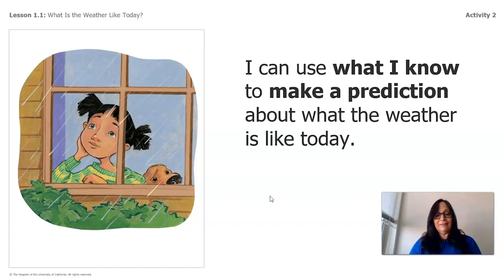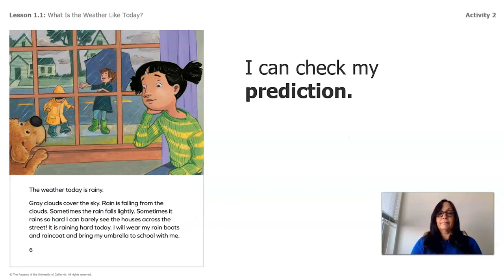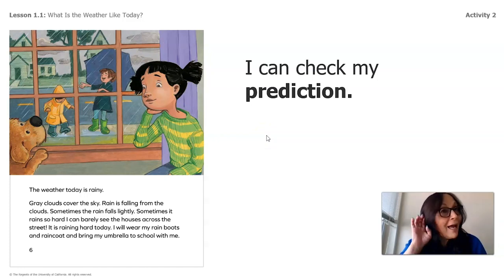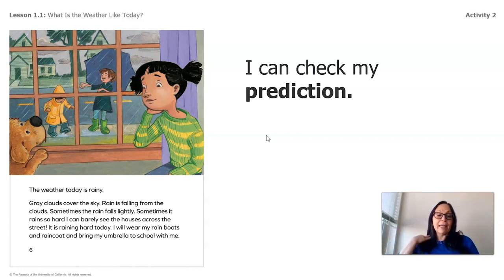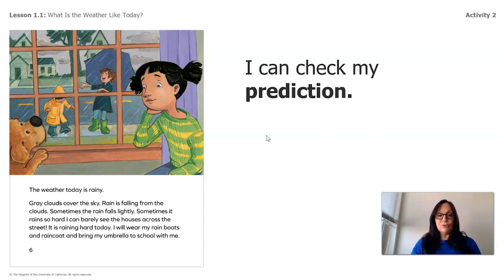Do you want to find out? Let's see our next page. Now I can check my prediction — and yes, the weather today is rainy! Gray clouds cover the sky and rain is falling from the clouds. Sometimes the rain falls lightly; sometimes it rains so hard I can barely see the houses across the street. It is raining hard today — I will wear my rain boots and raincoat and bring my umbrella to school.